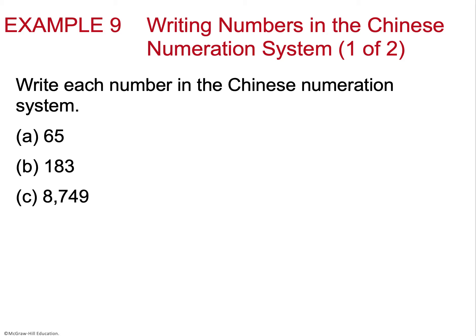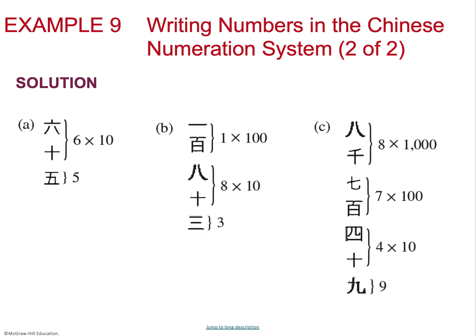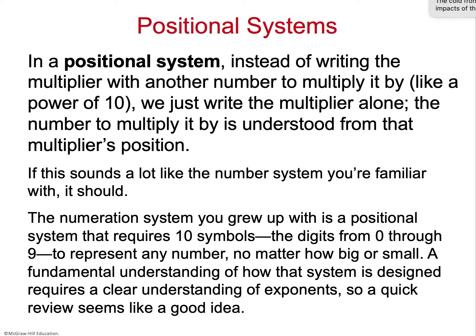Converting to Chinese numerals: 65 is 6 × 10 plus 5 ones, so I write the symbol for 6 next to the symbol for 10, then the symbol for 5. For 183, I have 1 × 100, 8 × 10, and 3 ones, so I write each multiplier symbol next to its place-value symbol vertically — very helpful for reinforcing numerical grouping systems.